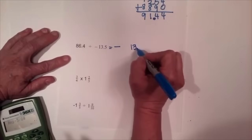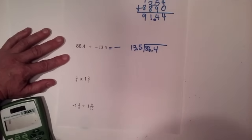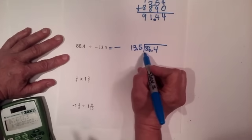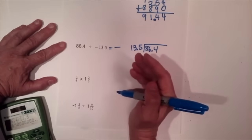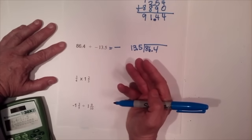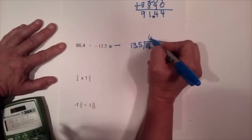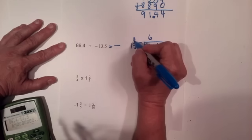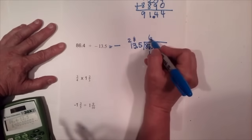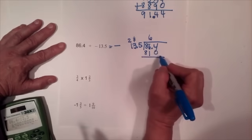How many times does thirteen go into eighty-six? Doubling thirteen is twenty-six; doubling twenty-six is fifty-two — that's four of them. Adding another twenty-six puts me around seventy-eight, close to eighty-six, so I'll try six. Six times five is thirty, carry the three; six times three is eighteen plus three is twenty-one, carry the two; six times one is six plus two is eight. I came in just under eighty-six point four — I got eighty-one — so subtracting gives four point five. Bring down a zero.